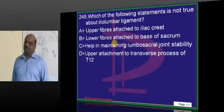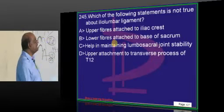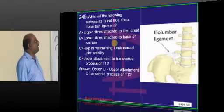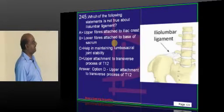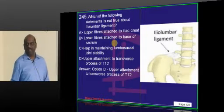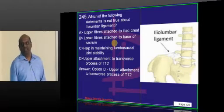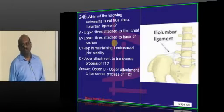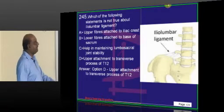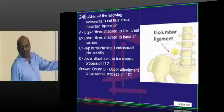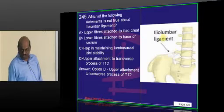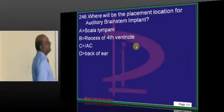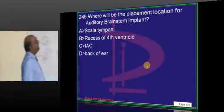The iliolumbar ligament, as the name says, does not go to the thoracic area. It extends from the iliac crest to the fifth lumbar transverse process — that is its origin and attachment.